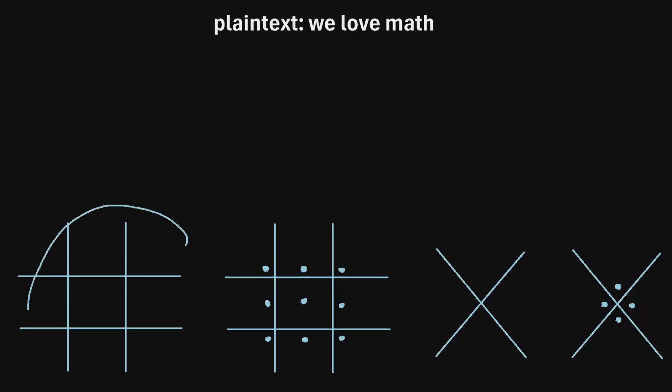We're first going to draw two tic-tac-toe board shapes, in which the first tic-tac-toe board contains the first nine letters of the alphabet. Then in the second tic-tac-toe board, notice that we've drawn little circles in each of the squares. So in this tic-tac-toe board, we're going to write the next nine letters of the alphabet.